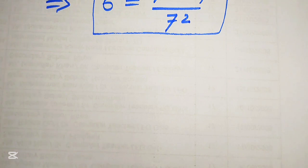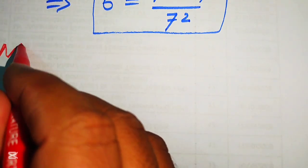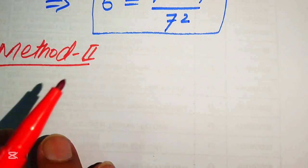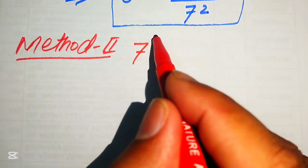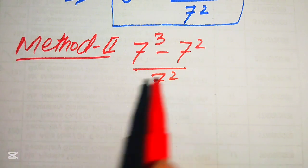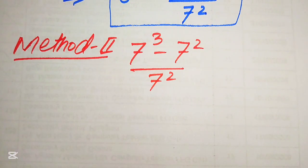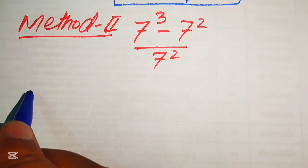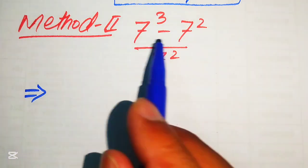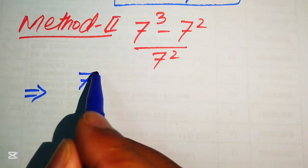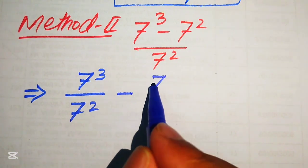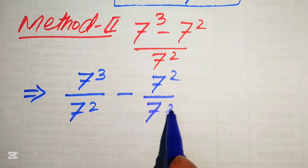Now we solve this problem using the second method. We write the given expression: 7 cubed minus 7 squared, divided by 7 squared. In the second method, we break this fraction by writing 7 squared separately under both terms, giving us 7 cubed divided by 7 squared, minus 7 squared divided by 7 squared.